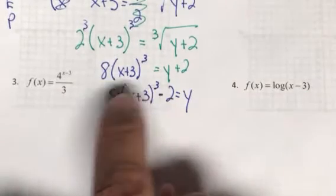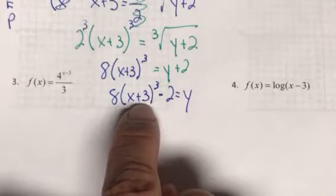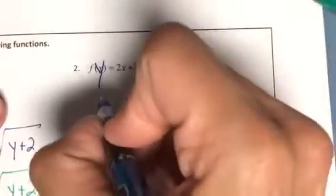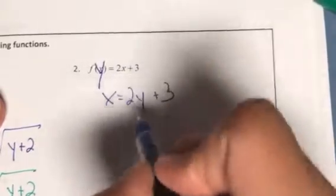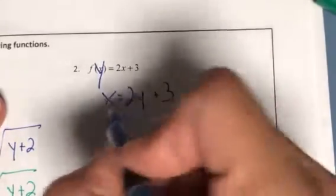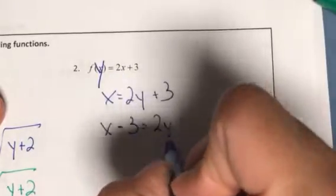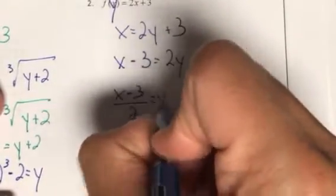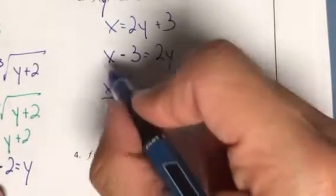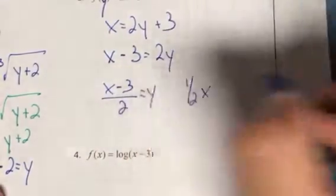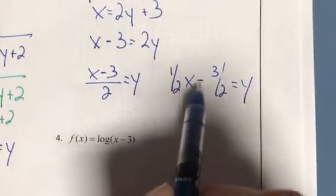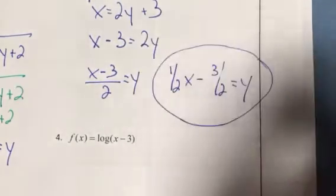In terms of graphing, this inverse would mean your parent function is x³, and the shape would stretch by 8, shift left 3, and shift down 2. For the next inverse, change f(x) to y, switch x and y, then solve for y. First subtract 3, then divide by 2 — you can write the answer as x/2 - 3/2, which is just a linear function in slope-intercept form.